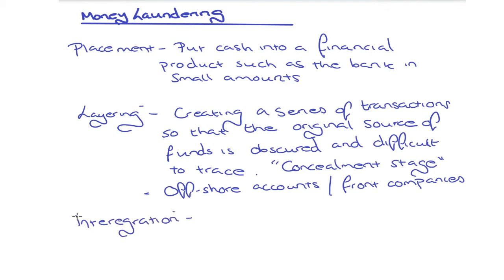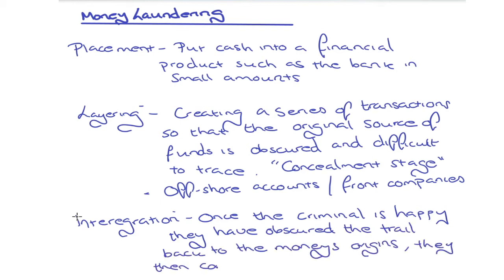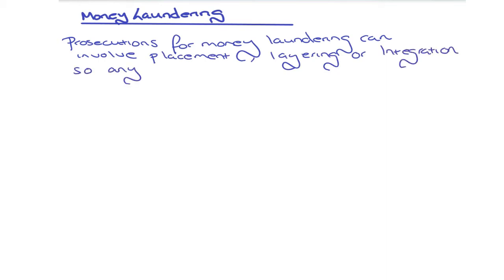The third stage is integration. This is where, once the criminal is satisfied they've obscured the trail back to the money's origins, they convert the proceeds into a legitimate form — such as the purchase of an asset like a house, a car, or another business. Prosecutions for money laundering can involve placement, layering, or integration — any one of those stages.